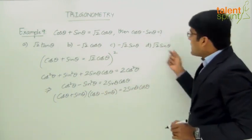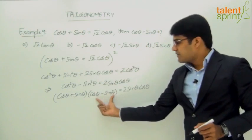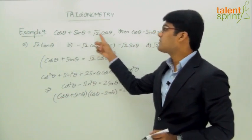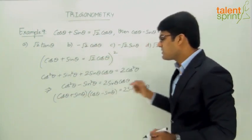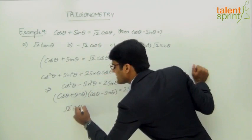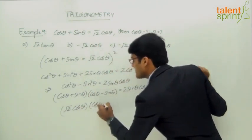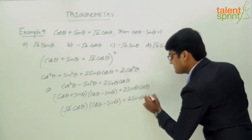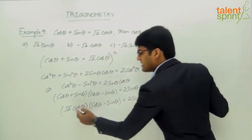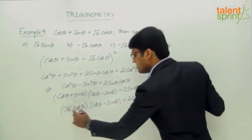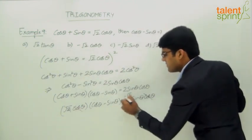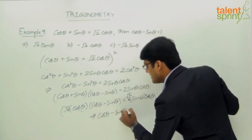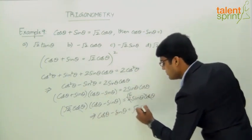Our required answer, cos theta minus sin theta, appears on the left-hand side, along with cos theta plus sin theta, which is given as root 2 cos theta. Substituting, we get root 2 cos theta into cos theta minus sin theta equals 2 sin theta cos theta. The cos theta cancels on both sides, and root 2 cancels since root 2 times root 2 equals 2.